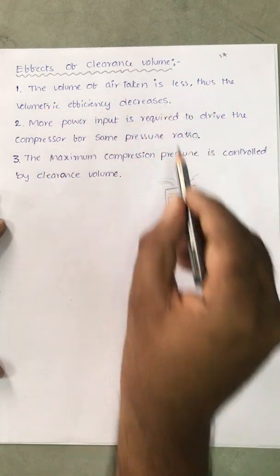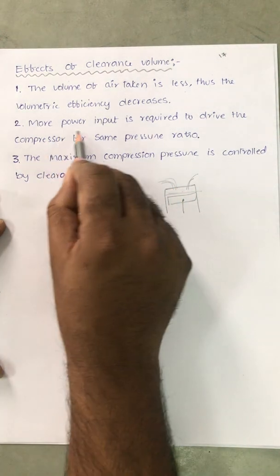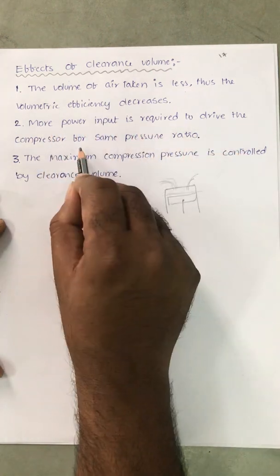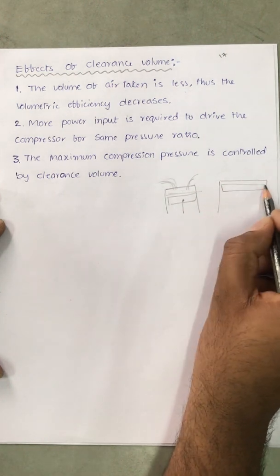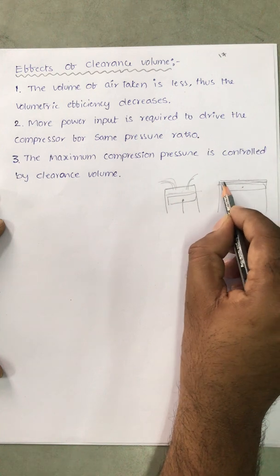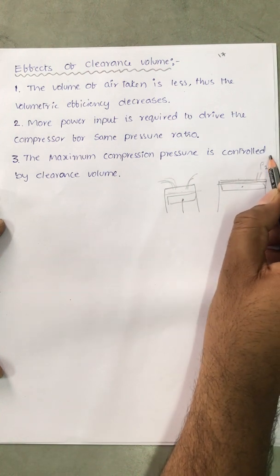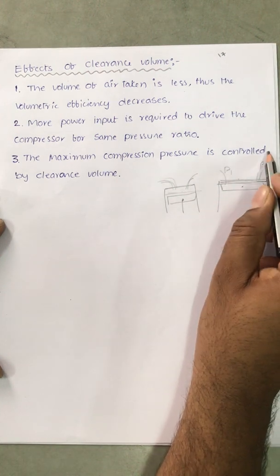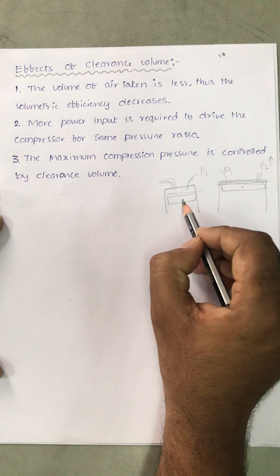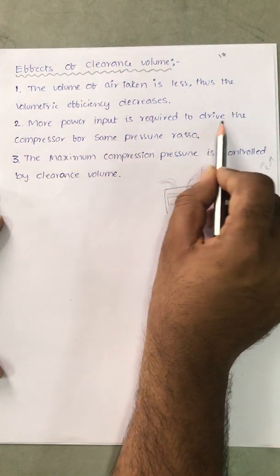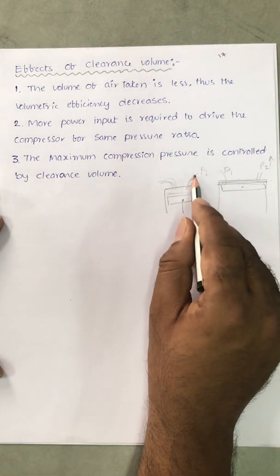Thus the volumetric efficiency decreases — if the volume of air taken into the cylinder is reduced, the volumetric efficiency is automatically reduced. The second effect is that more power input is required to drive the compressor for the same pressure ratio. If there is no gap between the piston and cylinder head, compression is very effective and you get a higher P2. But with a clearance gap, to reach the same P2 pressure you need to supply more work input.